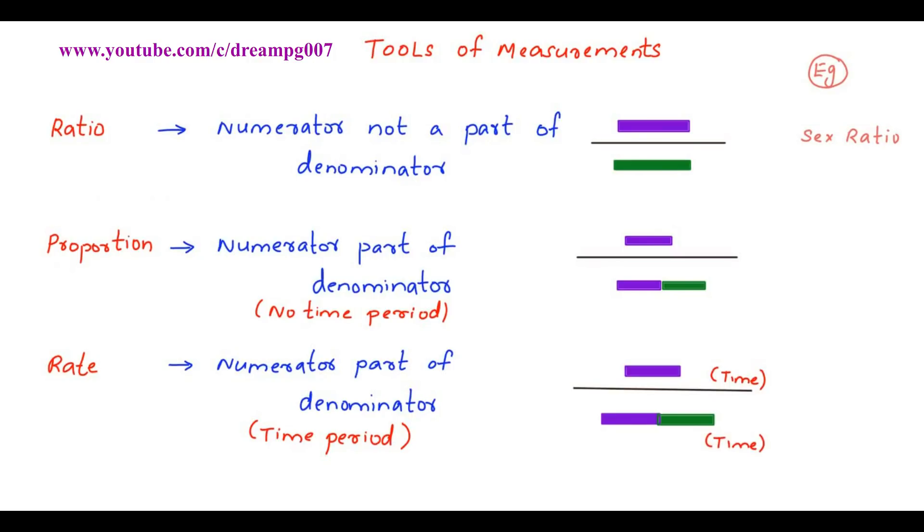Let's have a look into the example of proportion and rate. Example of proportion is case fatality rate, whereas example of rate is proportional mortality rate. Are you confused? Let's have a detail into it.